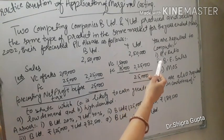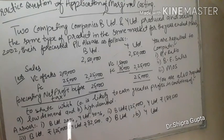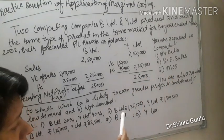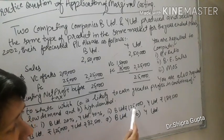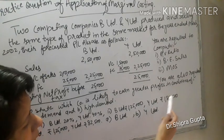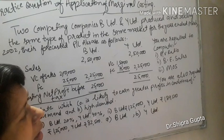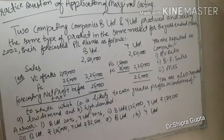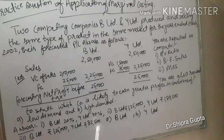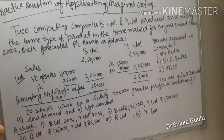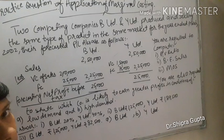The answers are: PV ratio — B Limited 20%, Y Limited 40%. Breakeven sales — B Limited ₹1,25,000 and Y Limited ₹1,87,500. Margin of safety — B Limited ₹1,25,000 and Y Limited ₹82,500. In low demand conditions, B Limited is better than Y Limited, and in high demand conditions, Y Limited is better than B Limited.